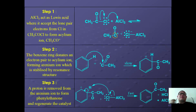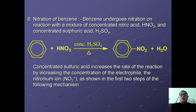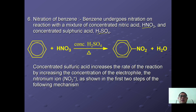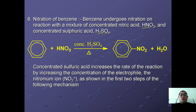The fourth reaction is nitration of benzene. Benzene undergoes nitration with a mixture of concentrated nitric acid (HNO3) and concentrated sulfuric acid (H2SO4) under reflux to form nitrobenzene plus water. Concentrated sulfuric acid increases the rate of reaction by increasing the concentration of the electrophile, the nitronium ion (NO2+), as shown in the mechanism steps.